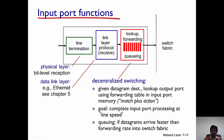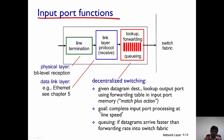The lookup and forwarding stage is where queuing delays can occur. Packets are continuously being received and must be looked up to determine which output port they should be directed to, so datagrams can queue up while this lookup and forwarding is taking place. The goal is to complete input port processing at line speed. If forwarding is slower than the line speed, queues will build up, and if the queue fills up, datagrams will be lost.